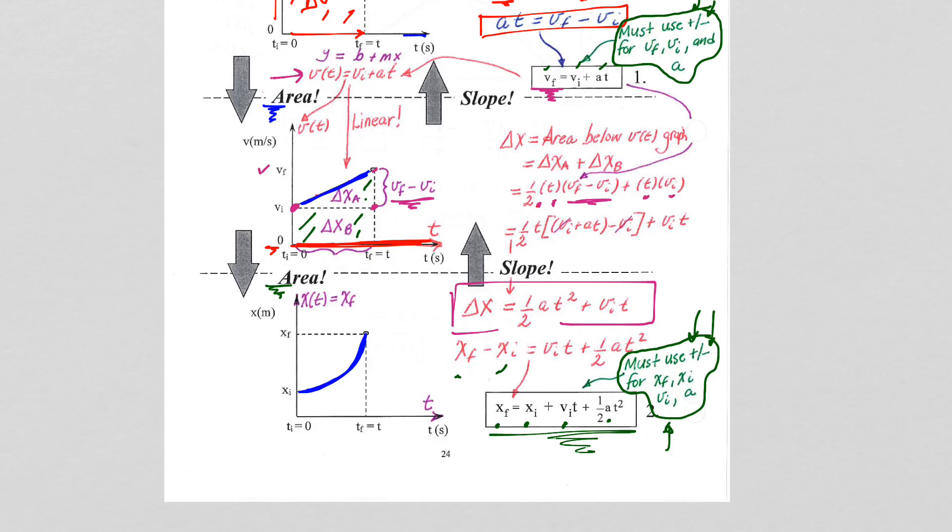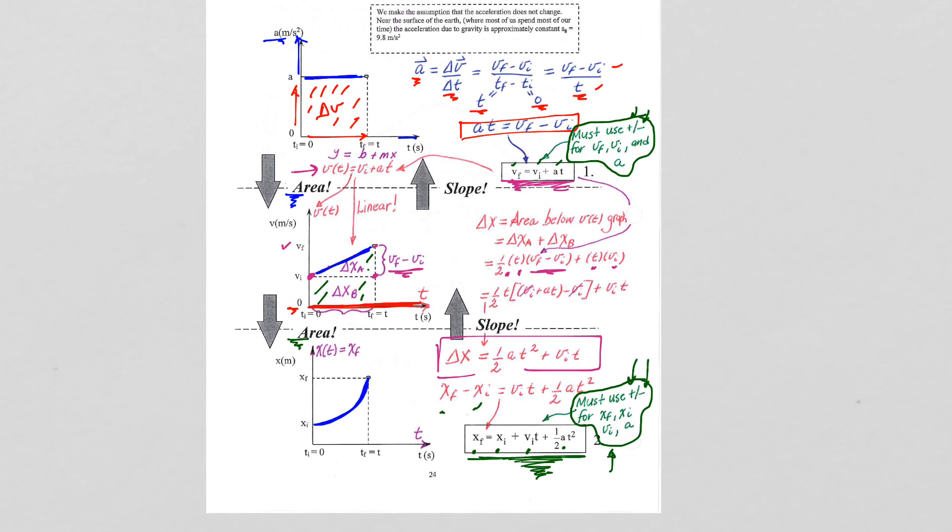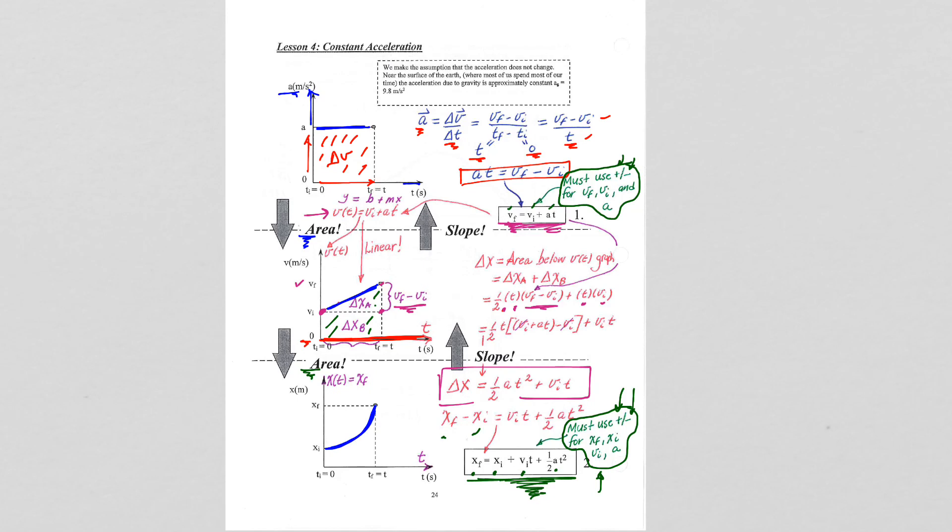V final equals V initial plus acceleration times time, and X final equals X initial plus V initial times time plus 1/2 AT squared throughout the entire year. So while you don't need to know the derivations, have them memorized, it is nice to see that they actually come from a logic flow and reasoning that we have been using all along.